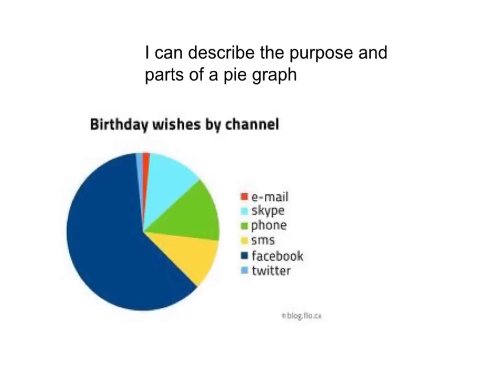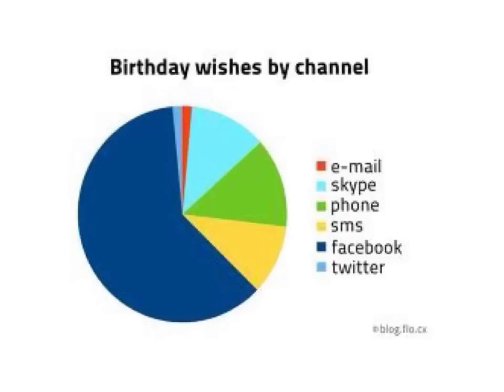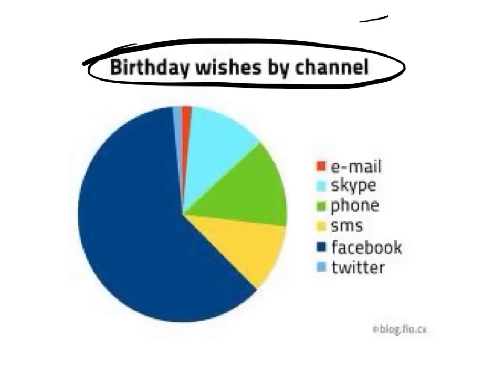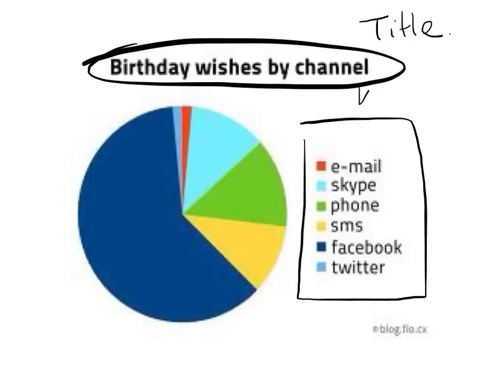Let's look at an example and look at the parts together. Here we have the pie graph. The title explains what the graph is about — in this case it's 'Birthday Wishes by Channel.' Then they will usually come along with a key. Sometimes they don't, and we'll look at the next couple of examples of that. The key explains what the different colours mean.